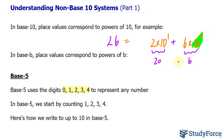Now what if we don't want to use base 10, and instead we want to use something else — something generic. In this case, we're saying base b. Place values that correspond to powers of base b can be written generically. Let's use 26 again, where we have 2 times b to the power of 1 plus 6 times b to the power of 0. We can replace b with any base that you like.